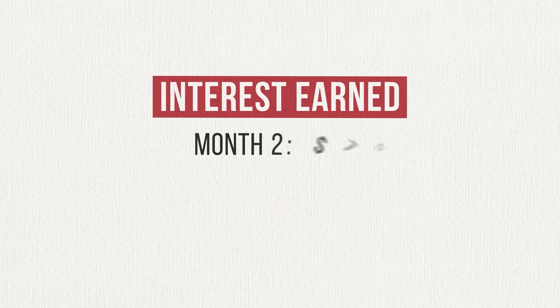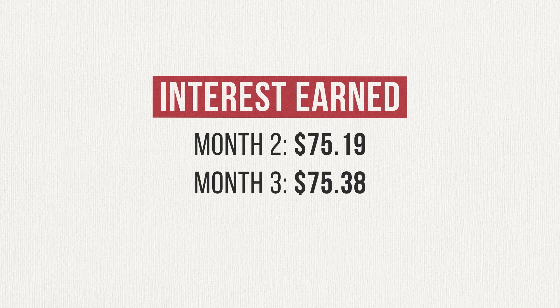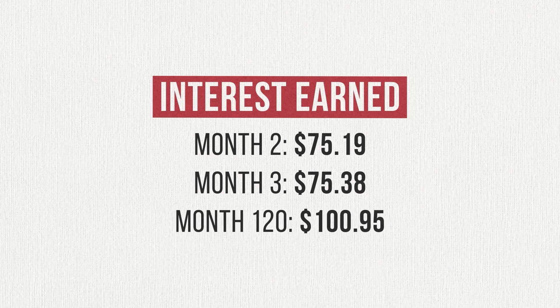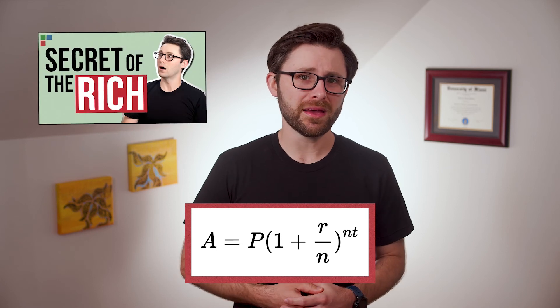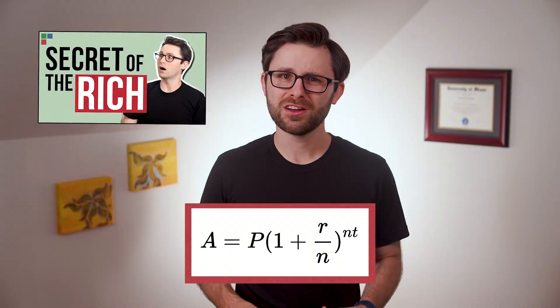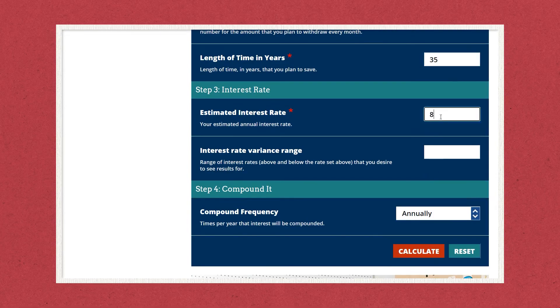In the second month I'm earning $75.19 in interest. In the third month, $75.38. In the 120th month — 10 years down the road — I'm earning $100.95 in interest, all without depositing another dime out of my own pocket. That's compound interest at work. To calculate how much compound interest you'll earn over a long period of time, there's a complex-looking math formula you can use, which I cover in another video dedicated entirely to compound interest. Or you can simply use the free compound interest calculator on the Investor.gov website, like I usually do. Link to that calculator is down below.